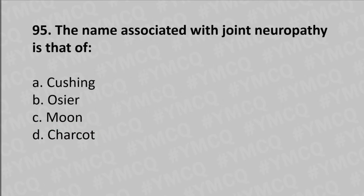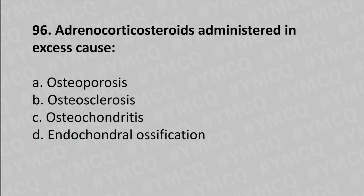Moving to our 95th question: the name associated with joint neuropathy is that of option A Cushing, option B Osler, option C Moon, option D Charcot. The answer is option D, Charcot. Moving to our 96th question: adrenocorticosteroids administered in excess cause option A osteoporosis, option B osteosclerosis, option C osteochondritis, option D endochondral ossification. The answer is option A, osteoporosis.